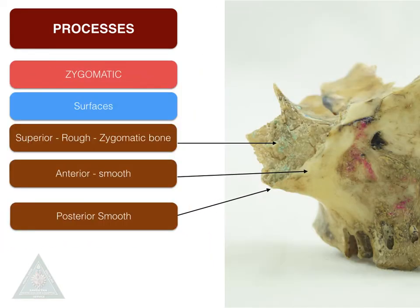Moving on to the zygomatic process — the zygomatic process is present on the superior lateral aspect of the body. It has got three surfaces: a superior surface which is rough and articulates with the maxillary process of the zygomatic bone, a smooth anterior surface which continues with the anterior surface of the body, and a smooth posterior surface that continues with the posterior surface of the body of the maxilla.